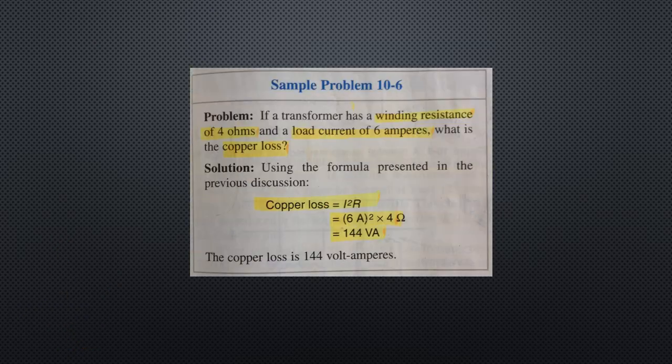Sample problem 10-6: If a transformer has a winding resistance of 4 ohms and a load current of 6 amperes, what is the copper loss? Using the formula copper loss = I² × R: 6² × 4 = 144 volt amperes. The copper loss is 144 volt amperes.